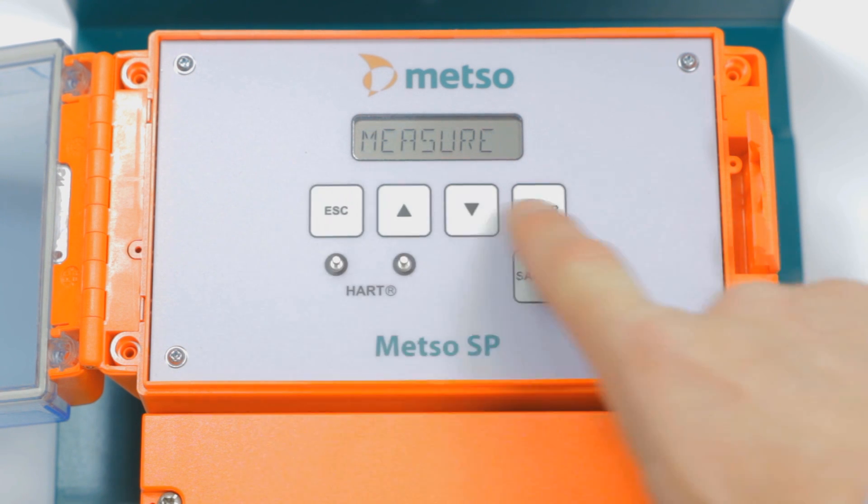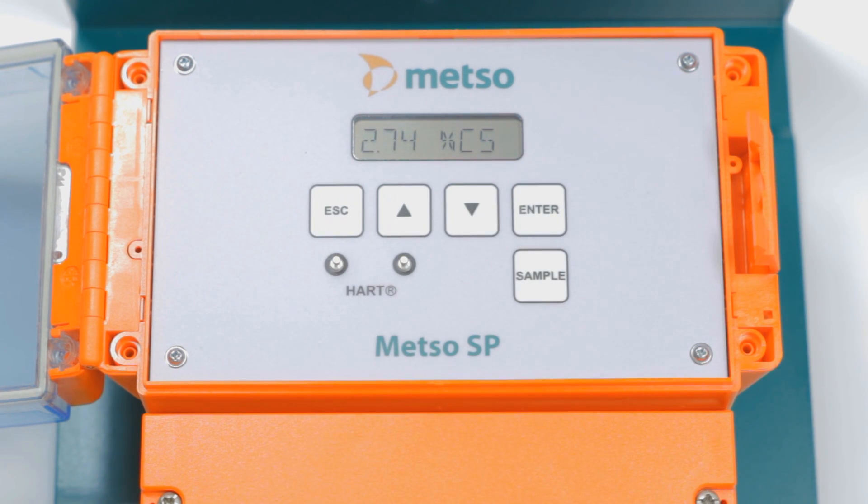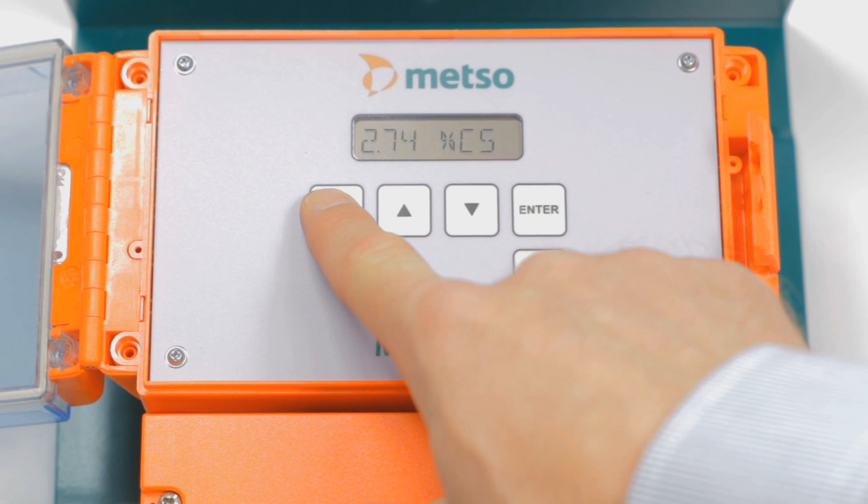So let's say we're going to take a calibration. We're back at the measure menu. It now is reading 2.74. We're going to take a sample. And as we take a sample, we write the reading down at 2.74. And we go to the lab.